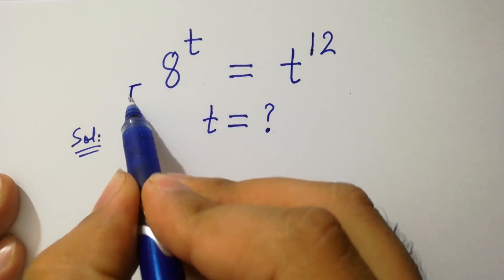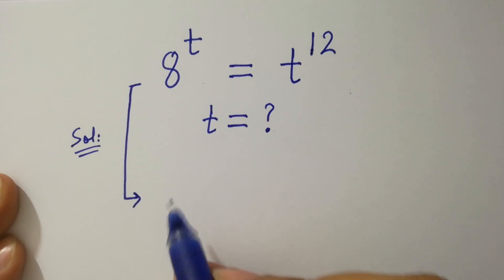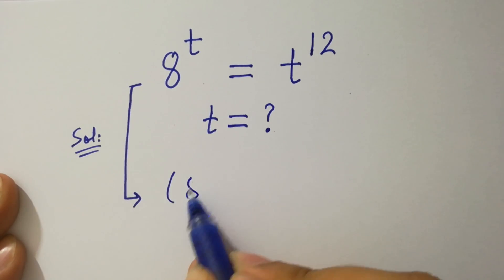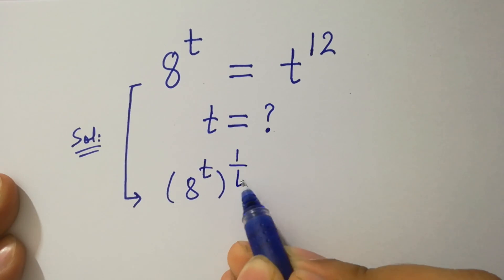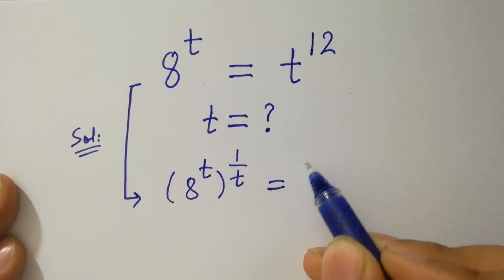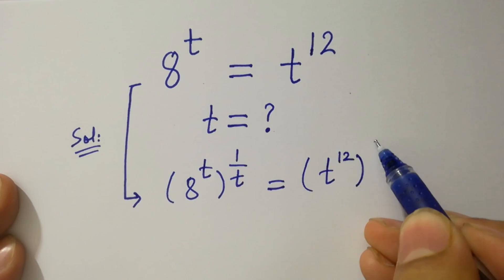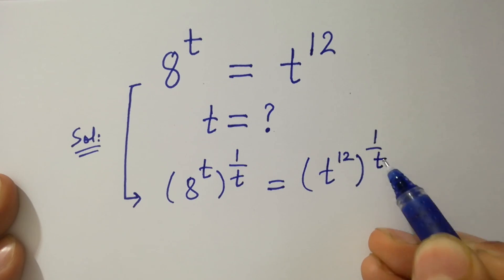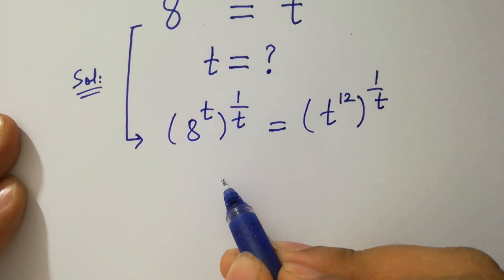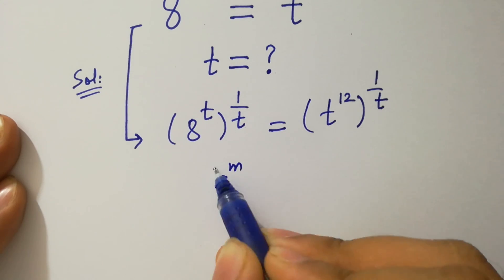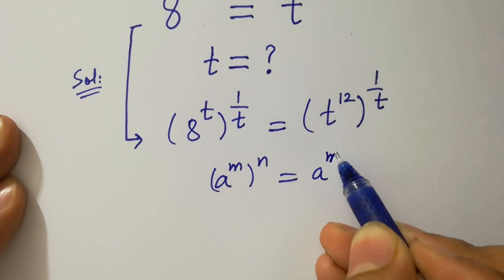To solve this, take power 1 over t on both sides. Since t to the power 12 to the whole power 1 over t, and since a to the power m to the whole power n equals a to the power mn.